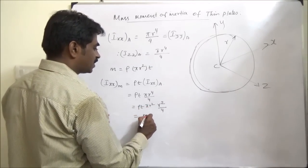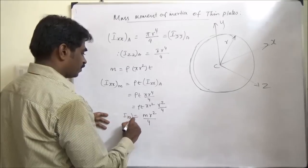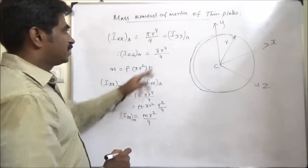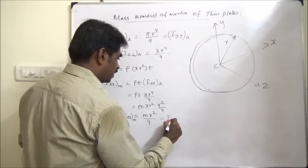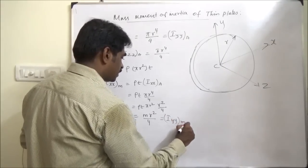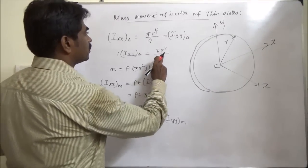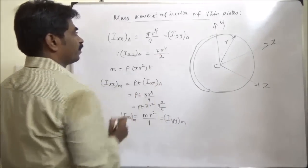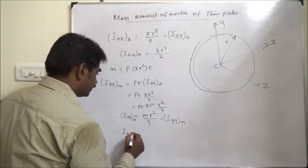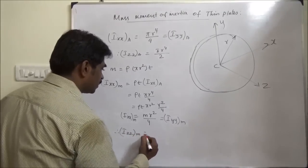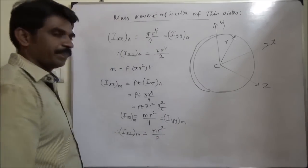This gives Ixx_mass = M·r²/4. Since the formula is the same for Iyy by symmetry, Iyy_mass = M·r²/4. Therefore Izz_mass = M·r²/2.